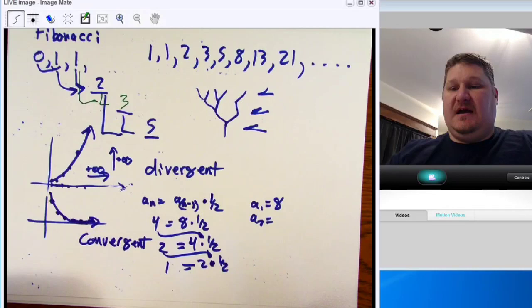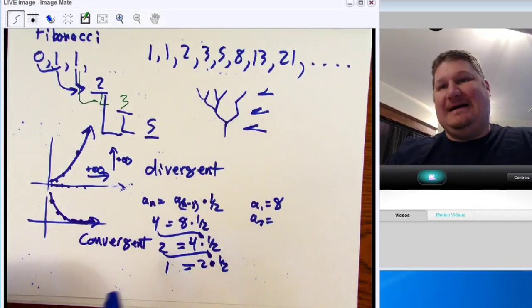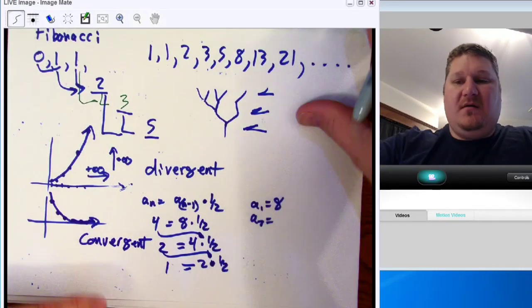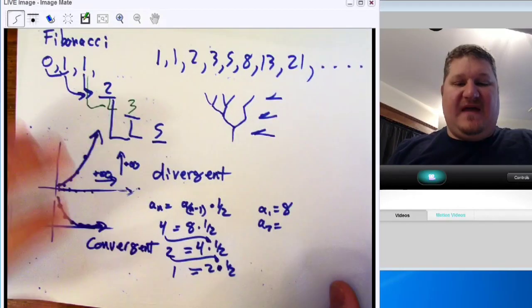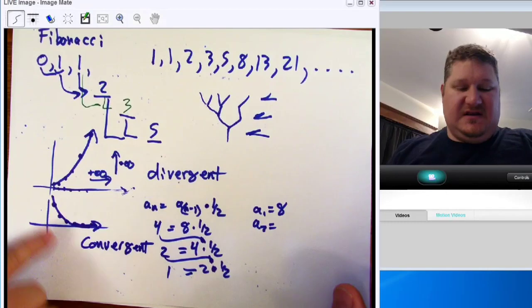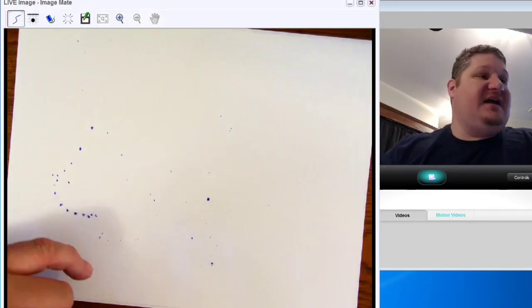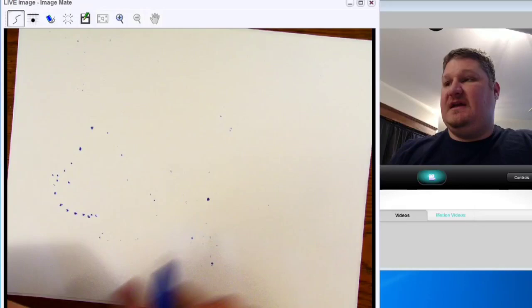Now, there are other things where it can converge to a different number, but we'll get to that here in a little bit. So, you have those. Now, that's just using the sequence and the individual terms of the sequence. What we're going to deal with next is going to be series.